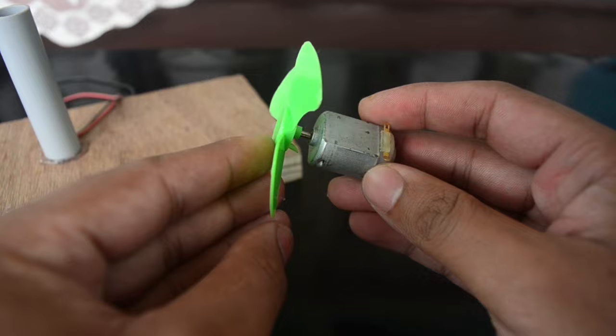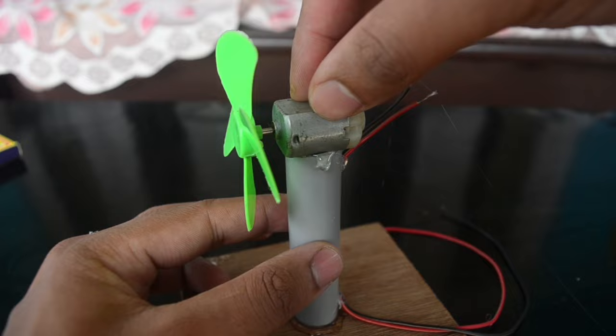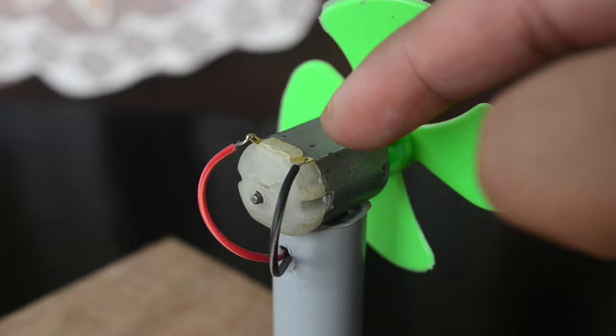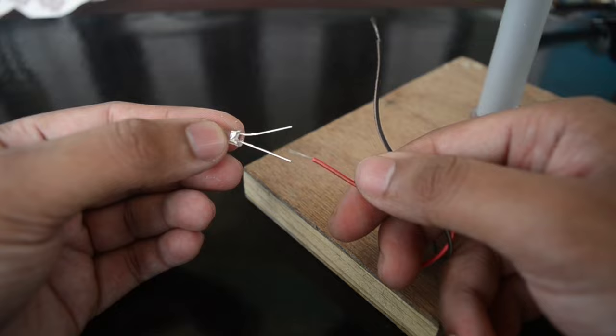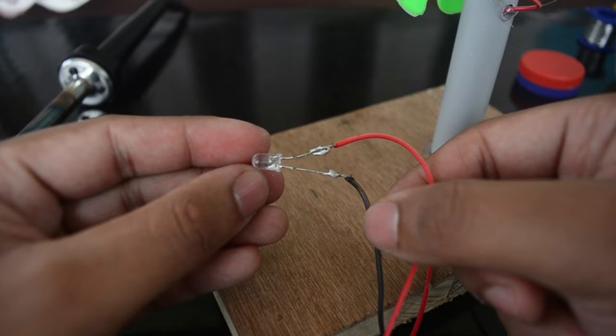Now apply some glue on top of the tube and fix the motor on top of it. And then connect the two wires to the two terminals of the motor, and connect the other end of the wires to the two terminals of a tiny LED bulb. Like this, and fix the bulb on top of a stand.